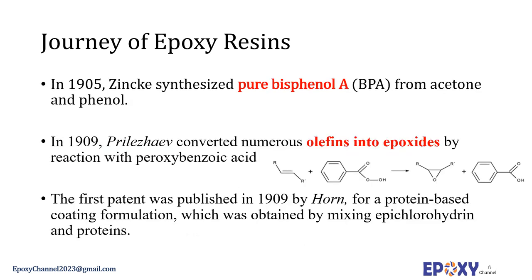In 1905, Zincke synthesized pure bisphenol A from acetone and phenol. Four years later, in 1909, Prilezhaev converted different olefins into epoxides by reaction with peroxybenzoic acid — this chemical reaction is presented here. The first patent was published in the same year by Horn for a protein-based coating formulation obtained by mixing epichlorohydrin and proteins.